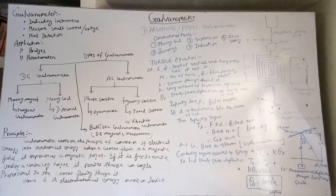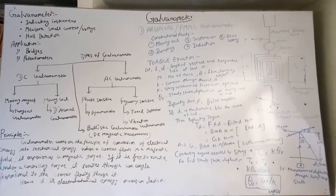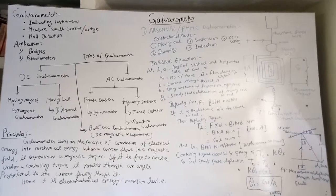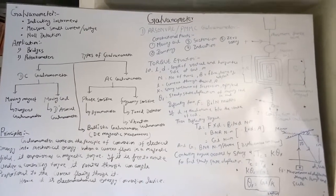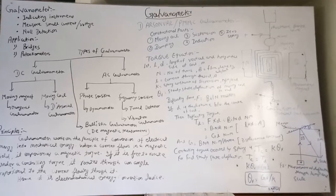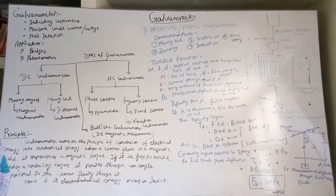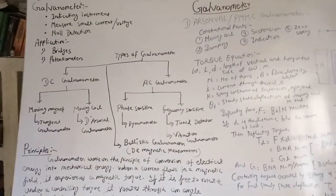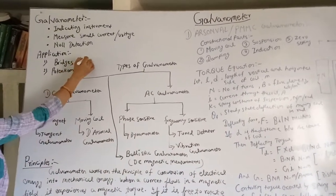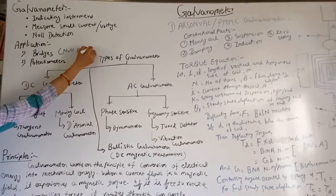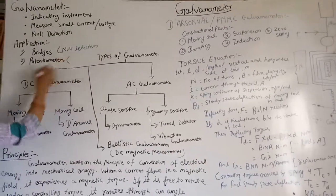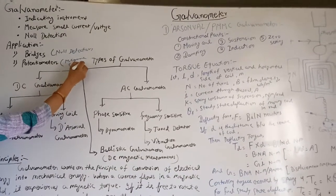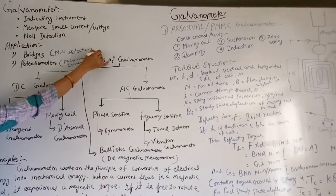Its application is in bridges and also it is used in potentiometer to show a small amount of current. In bridges it shows null detection. That is, in bridges its application is null detection and in potentiometer it measures a small amount of current.